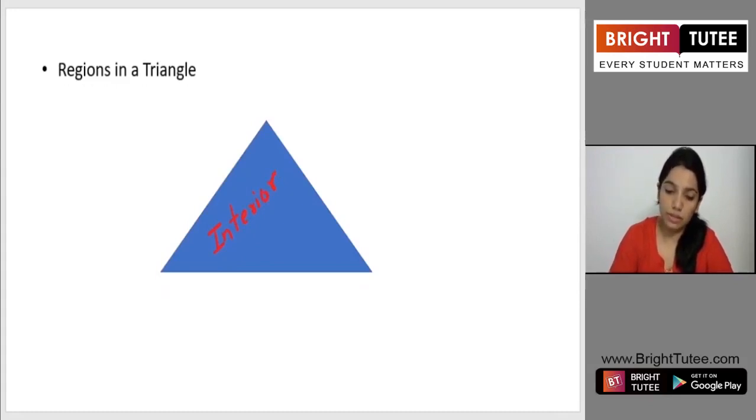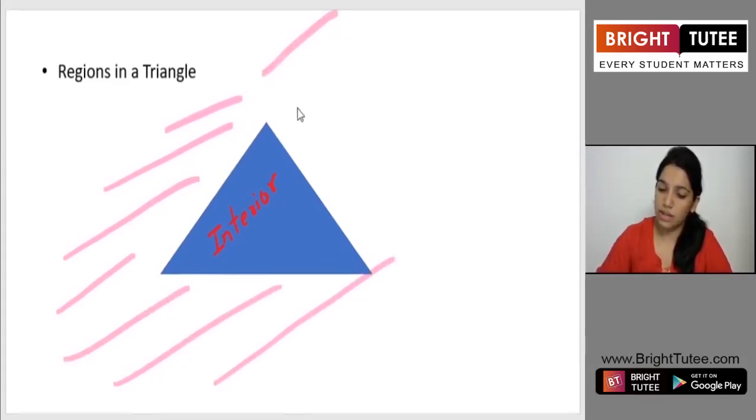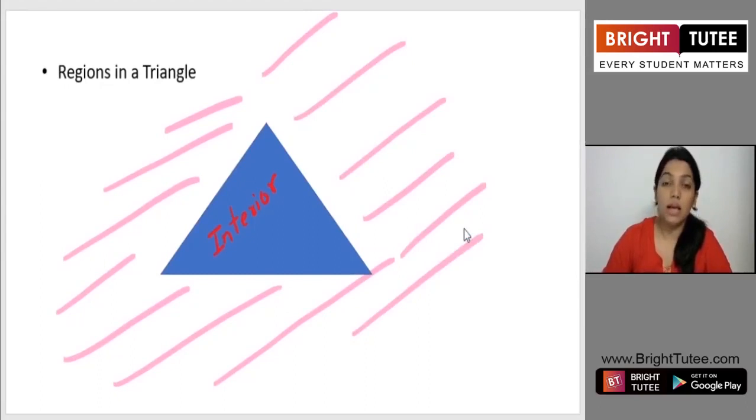Now if we see what is outside this, all this part here, all things that you see outside this triangle comes in the exterior region. And I hope you remember that if something is sitting on the boundary, if this is a point A sitting on the boundary, that is on one of the line segments, it is called sitting on the triangle.